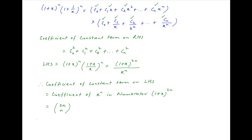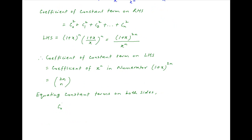This coefficient is C(2n, n). Therefore, equating the coefficients of the constant terms on both sides, we get C0² + C1² + C2² + ... + Cn² = C(2n, n).